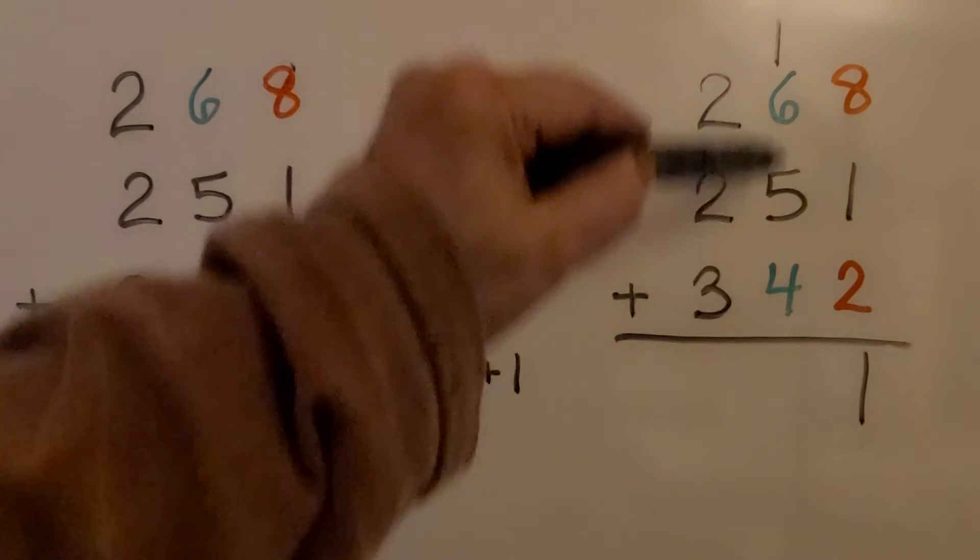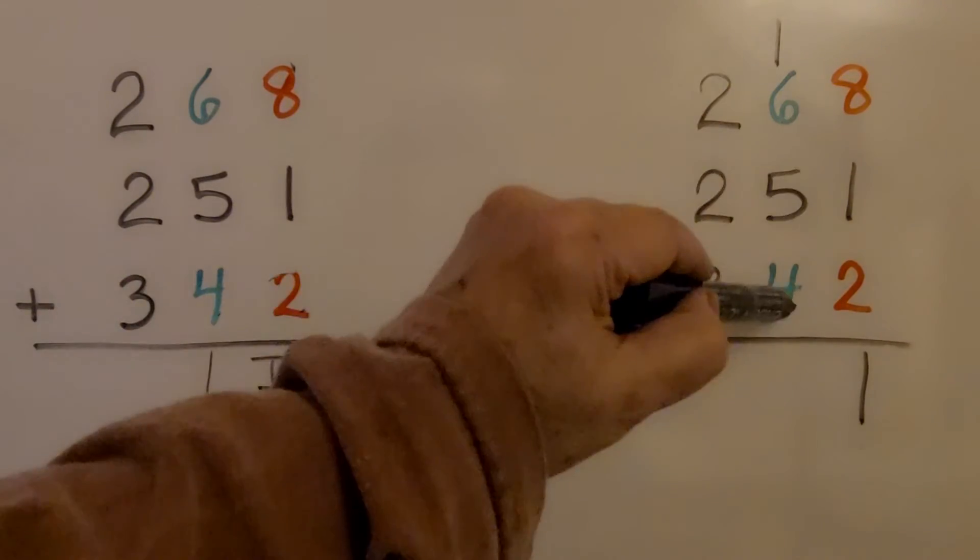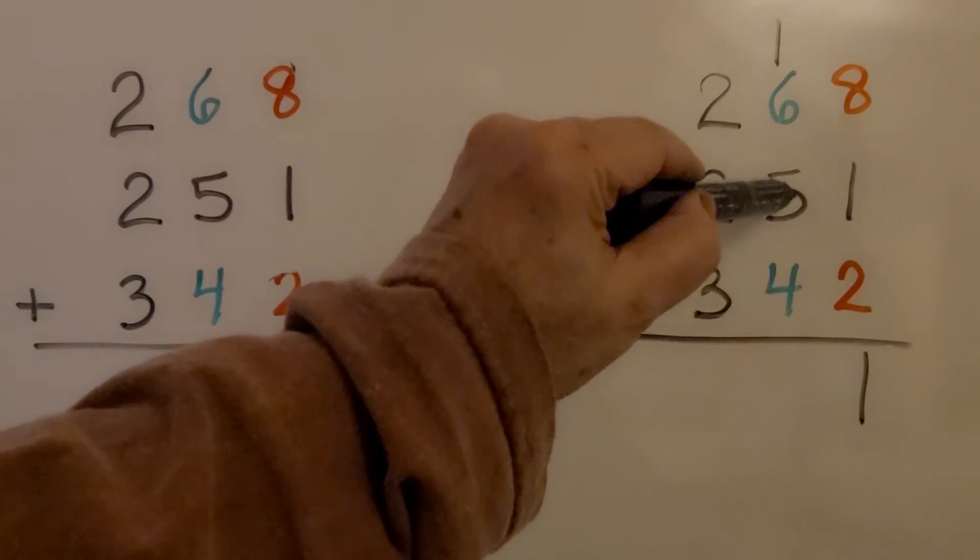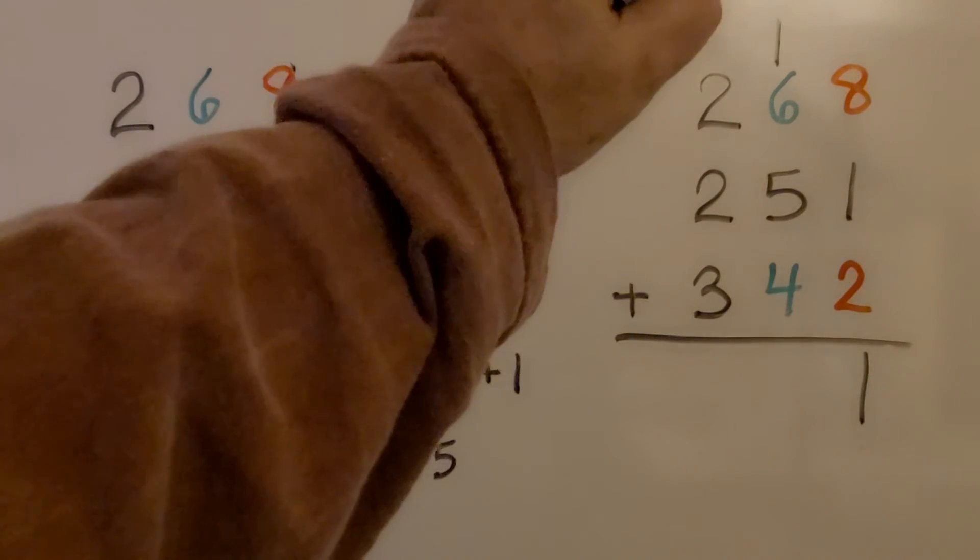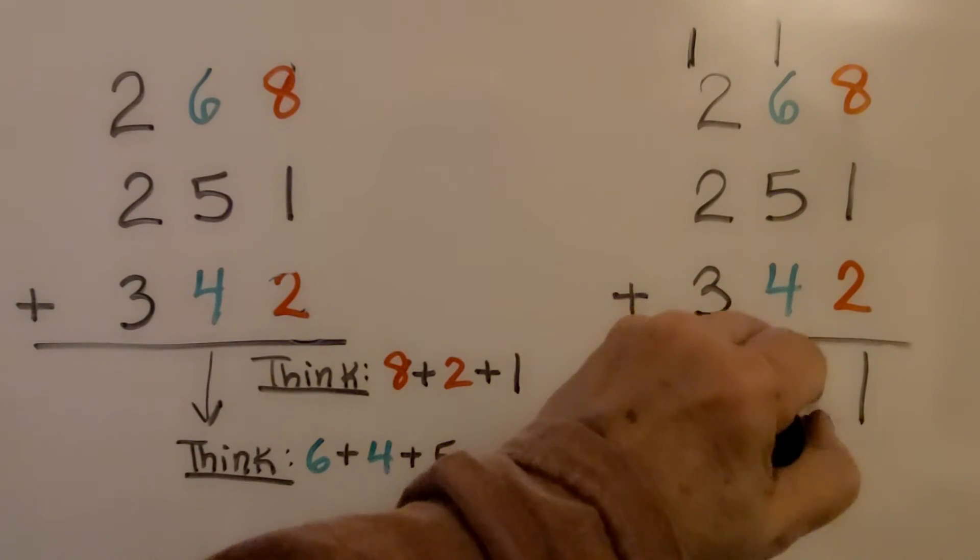Now, looking at the tens place value, I see a 6 and a 4 that makes a 10. We add 5, that's 15, and one more is 16. We regroup, put our 6 down here.